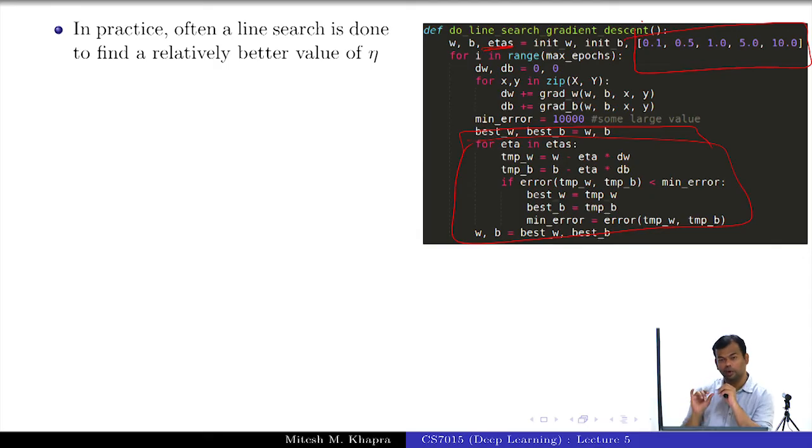Now what line search does is instead of just using one learning rate at every step, whether it is vanilla gradient descent, mini-batch, or stochastic, just use a bunch of learning rates. I have used 5 different learning rates here. I have computed the gradients. That part remains the same. The computation of gradients does not change.